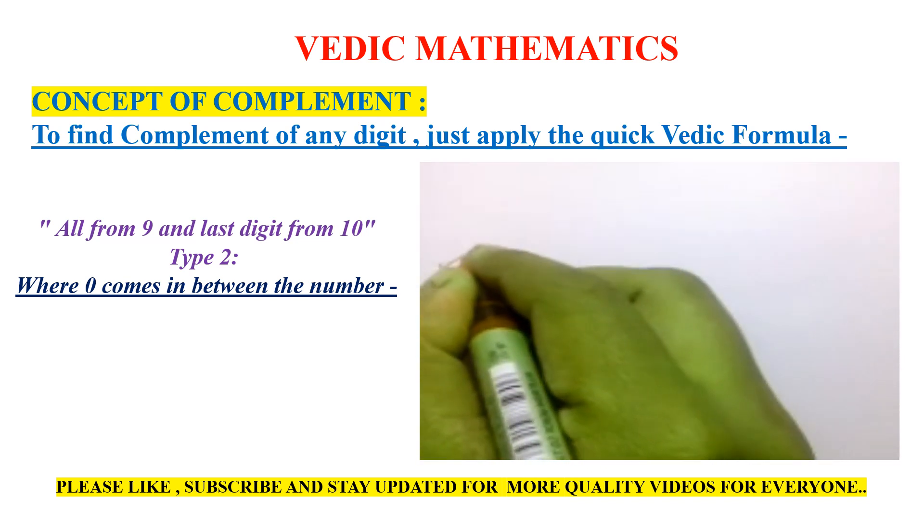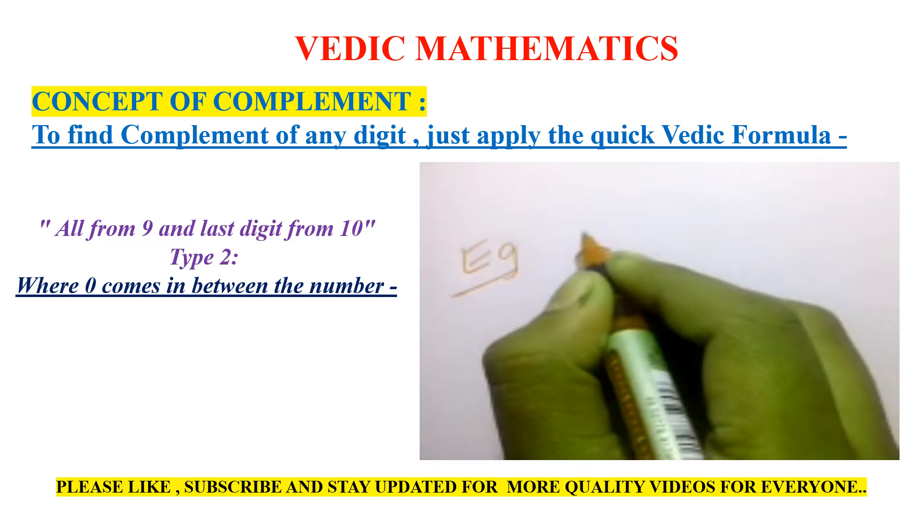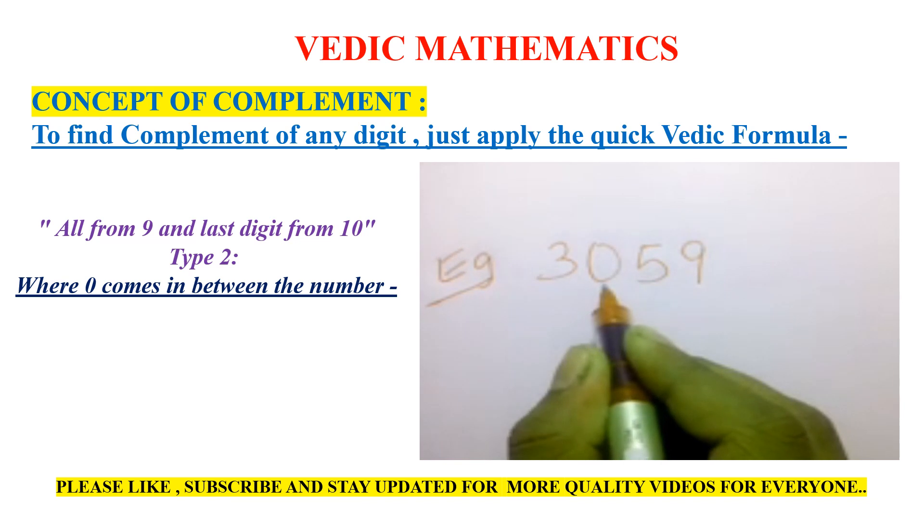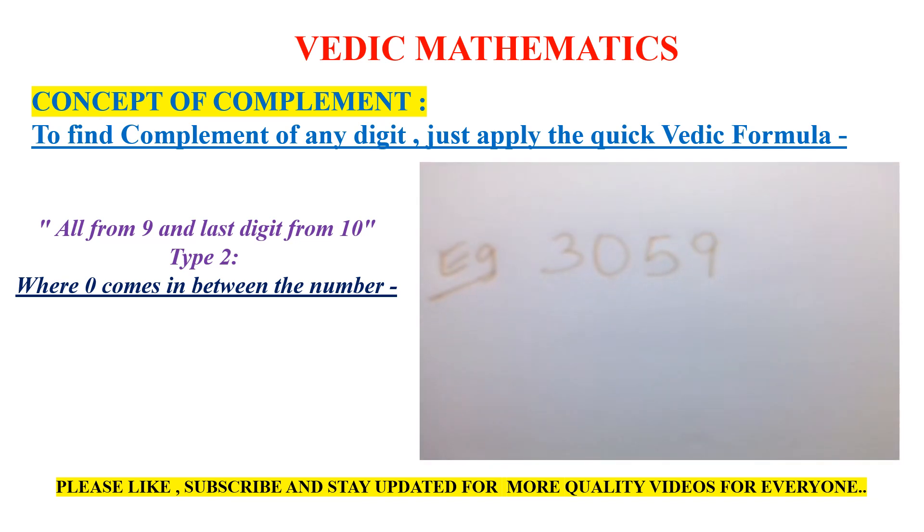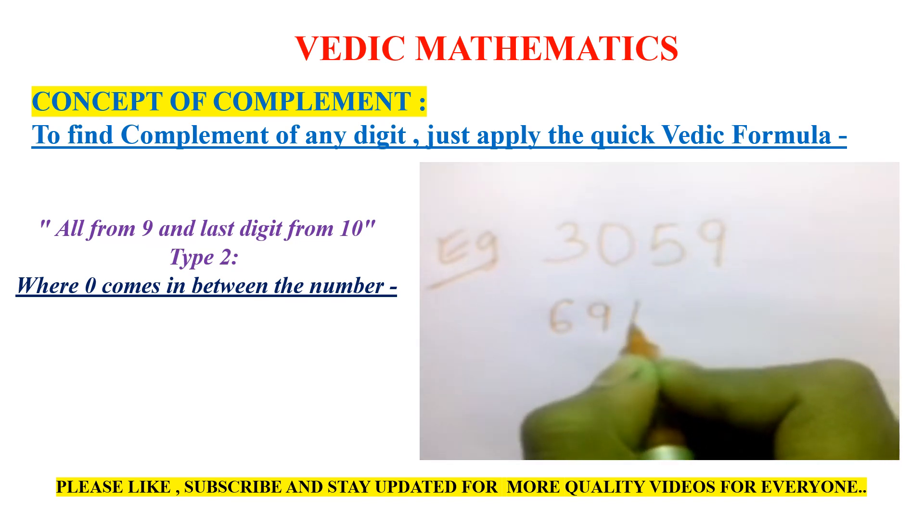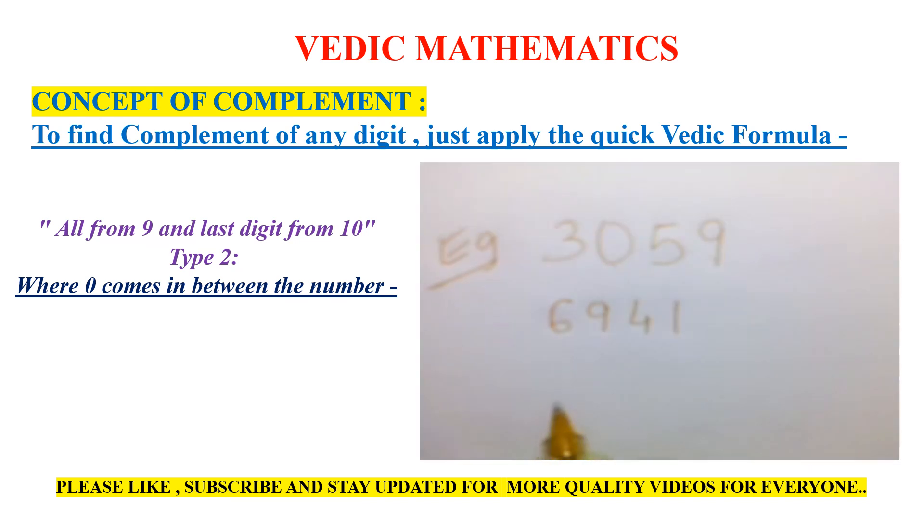We'll start with an example: 3059. When 0 comes in between the number, we treat it like any other digit and subtract from 9. Remember the formula: all from 9, and the last digit subtract from 10. So the complement would be 6941.